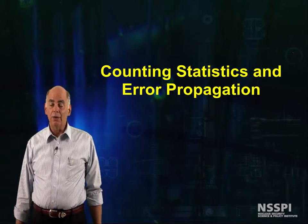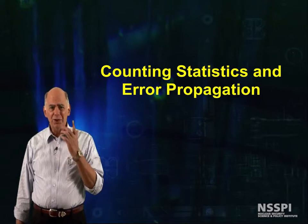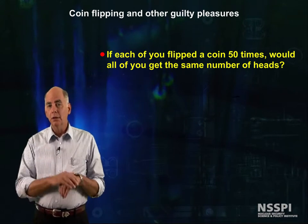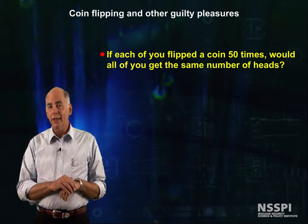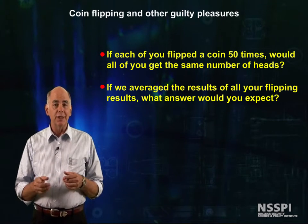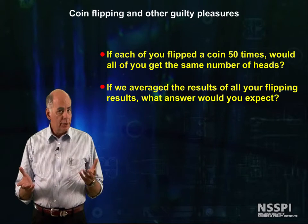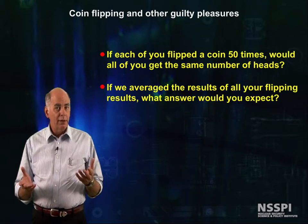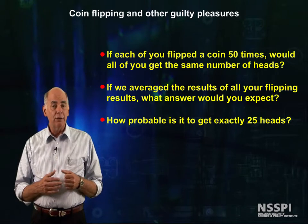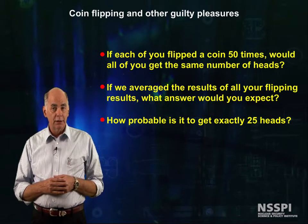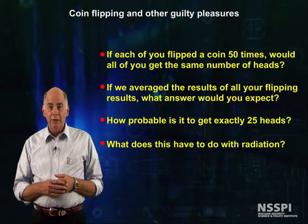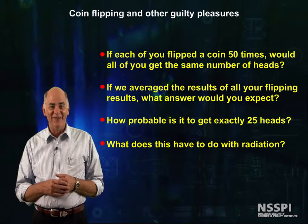To get us started along the right train of thought, let's do a thought experiment. If each of you flipped a coin fifty times, would all of you get the same number of heads? Next question, if we took each of your results and averaged them all together, what answer do you think we'd get? A tougher question, how probable is it that we get exactly twenty-five heads, or any one of you get exactly twenty-five heads? And finally, what the heck does this have to do with radiation?